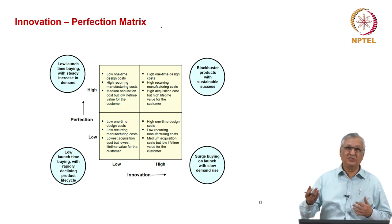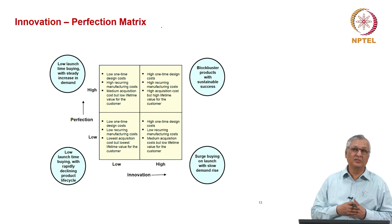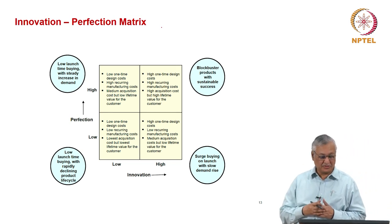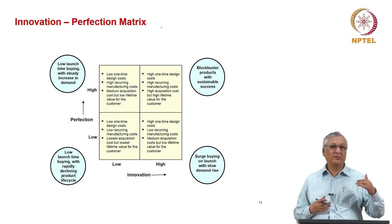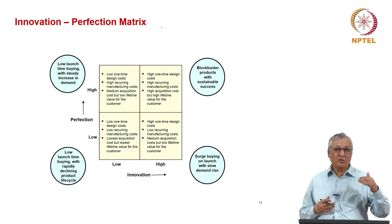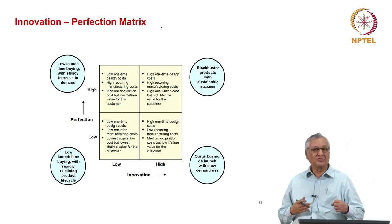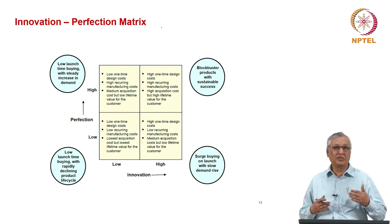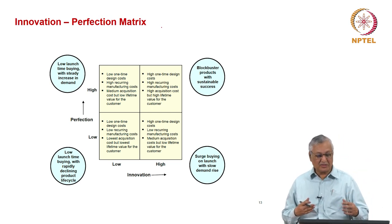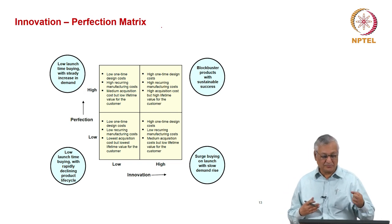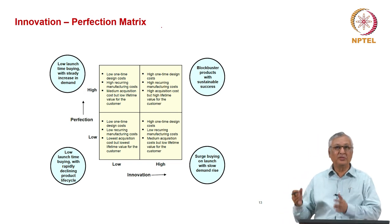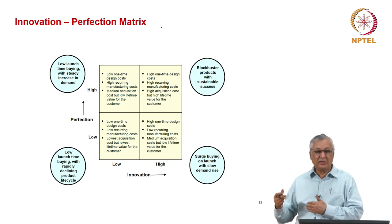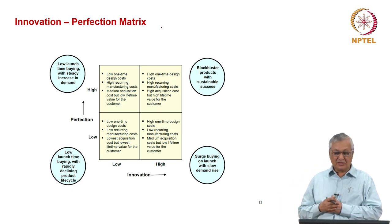So, when the innovation level is very high, what would happen? The design costs will be high — therefore, there would be high one-time design costs. Because the perfection level is low, the manufacturing tolerances and machine sophistication could be a little lower than what is expected of a high-perfection product. Therefore, the recurring cost could be lower, and the medium acquisition cost would be there, but there will be a lower lifetime value for the customer.